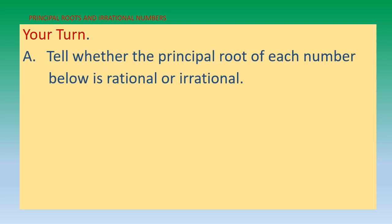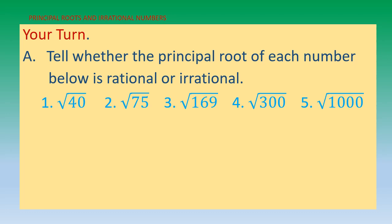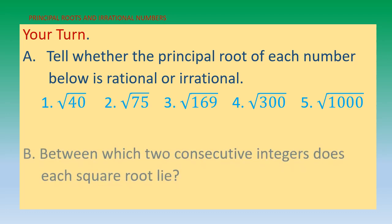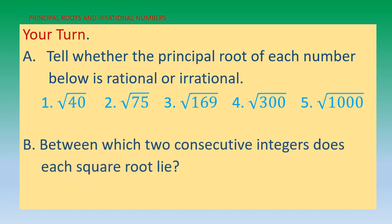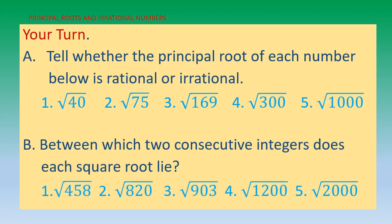Now it's your turn. Letter A: tell whether the principal root of each number below is rational or irrational — numbers 1 to 5. Letter B: between which two consecutive integers does each square root lie — numbers 1 to 5. I hope you will get these all correct. Good luck!